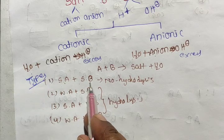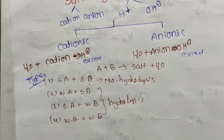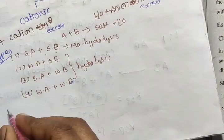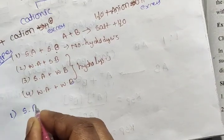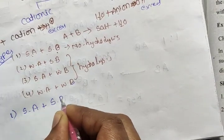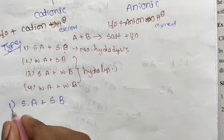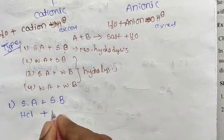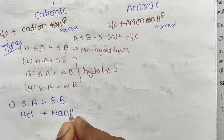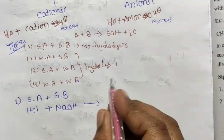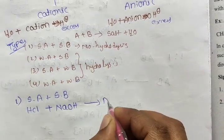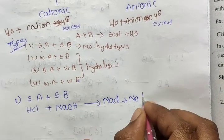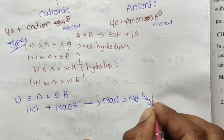Type 1: strong acid plus strong base. The salt formed does not undergo hydrolysis. Strong acid example is HCl, and the base is NaOH. This gives NaCl. When NaCl is dissolved in water, there is no hydrolysis.